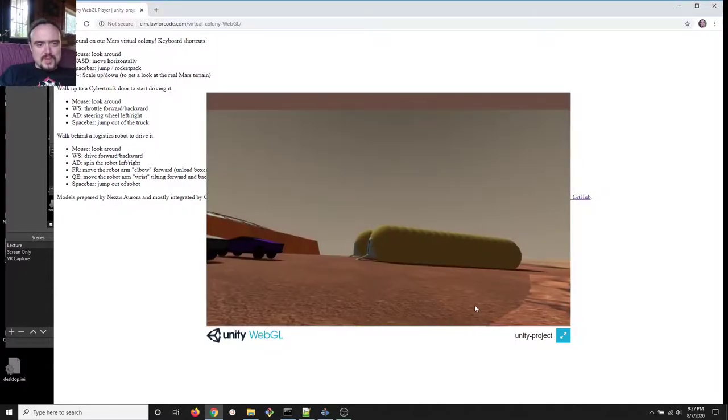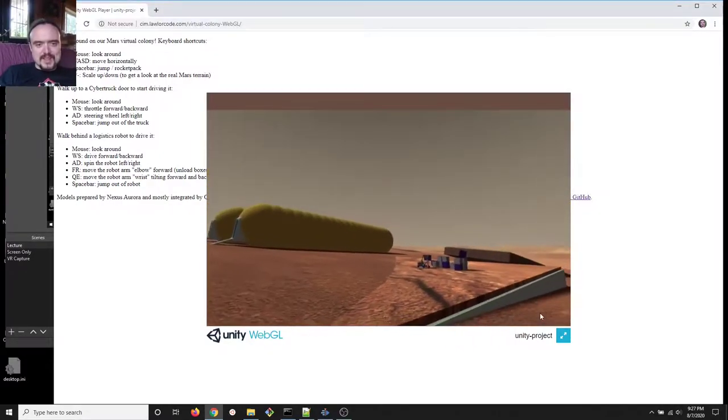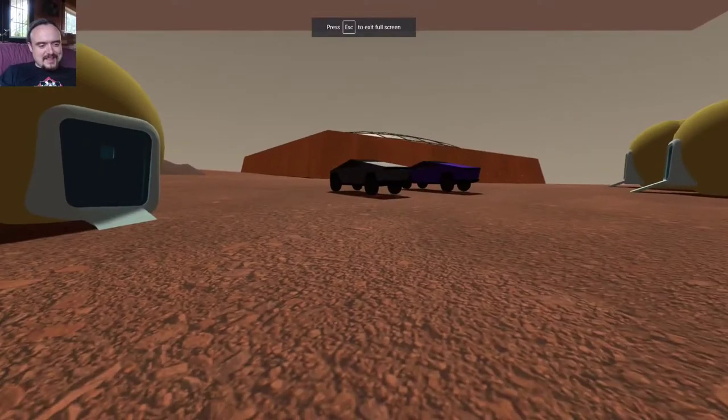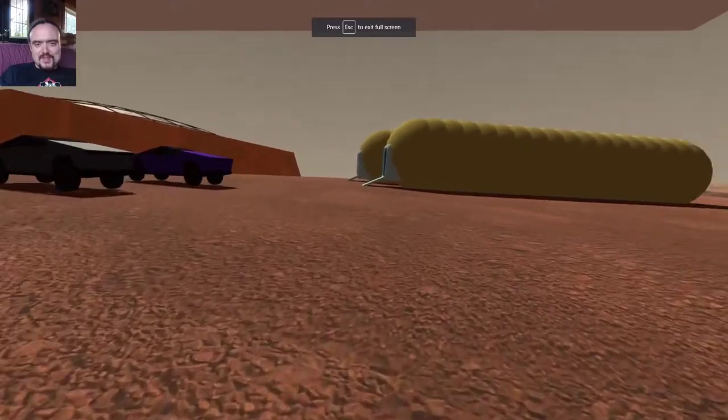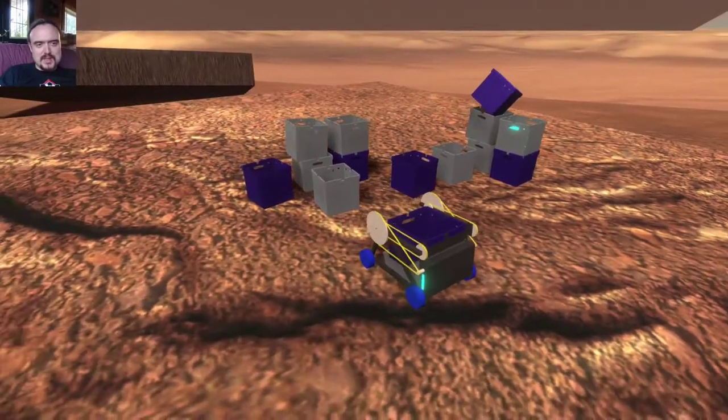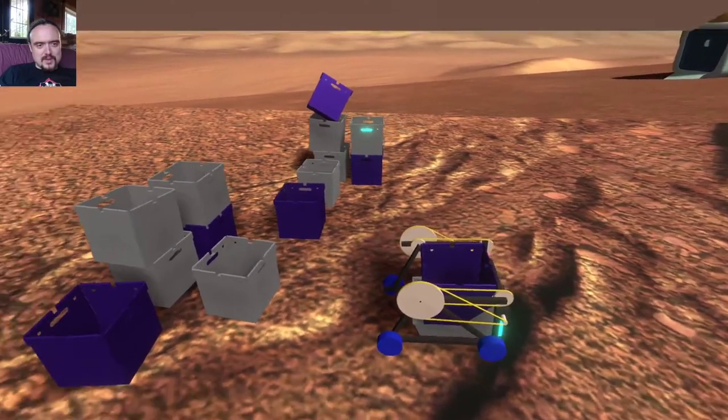So we have this little virtual Mars colony. I'm going to be looking at this logistics robot. So you start off walking around in the colony. You walk around with WASD. So there's our little robot.